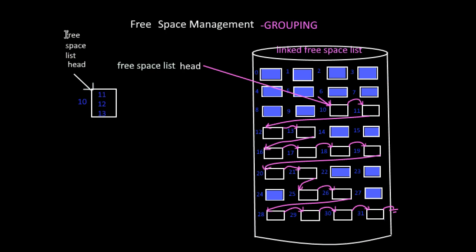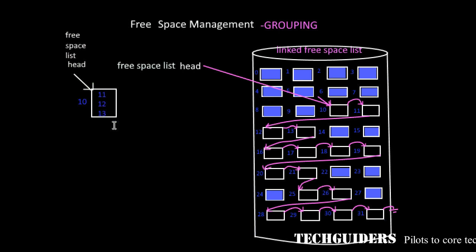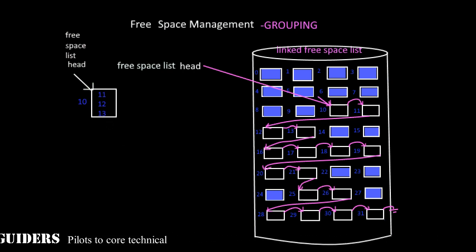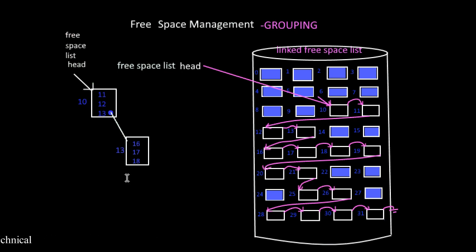Here the free space list head points to the first free block. The first free block is block 10, which contains a group of addresses of a particular number of free blocks. The last address — the block pointed by the last address — here the last address is 13, points to block 13, which contains another set of addresses of another set of free blocks. Again, the block pointed by the last address in it contains the addresses of another set of free blocks, and so on.